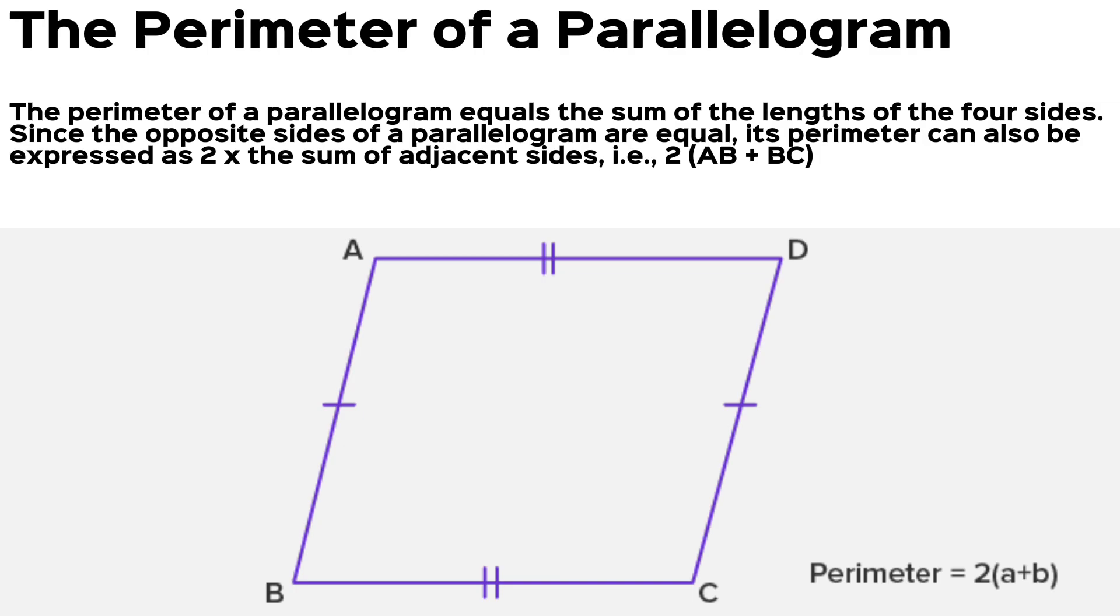its perimeter can also be expressed as 2 times the sum of adjacent sides, which is 2 times AB plus BC.